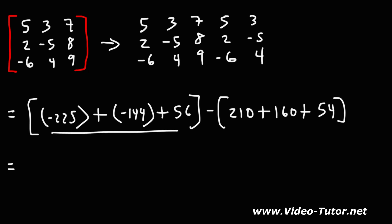So now, let's add these three numbers. Negative 225 minus 144 plus 56. That's going to be negative 313. And then 210 plus 160 plus 54, that's 424.